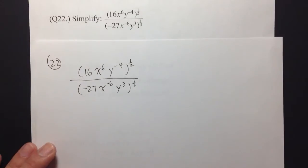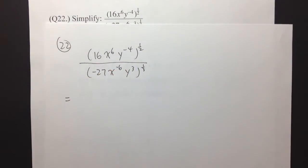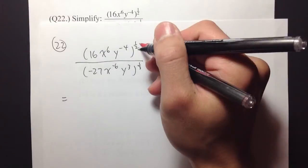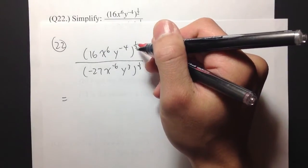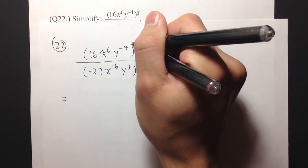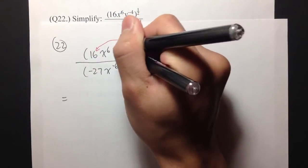So let's focus on this. Our first step is to take the exponent on the outside, which is the 1 half, and then distribute into the inside exponents.